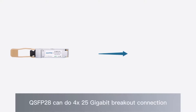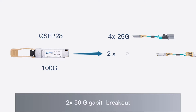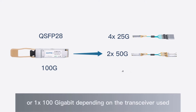QSFP28 can support 4 x 25Gbps breakout connection, 2 x 50Gbps breakout, or 100Gbps depending on the transceiver used.